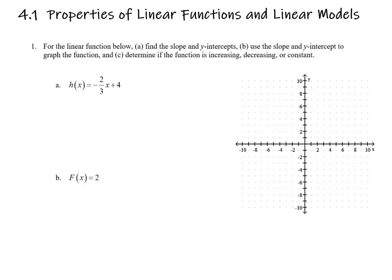We're going to dive right into doing some work. For number one, it's asking us to identify certain pieces. The slope is the coefficient of x, which is negative two-thirds. The y-intercept is the constant four — make sure you're not including the x with it. One way I like to write this is to drag the negative into the numerator so I can tell if it's going up or down.